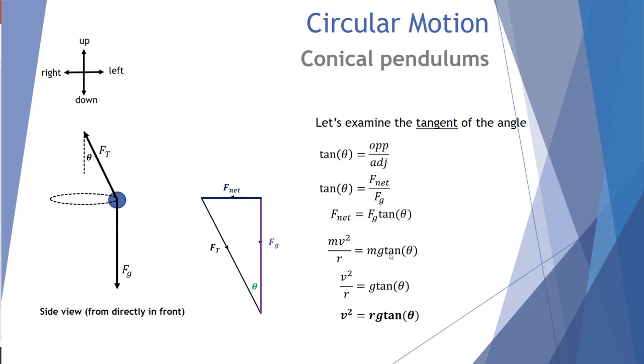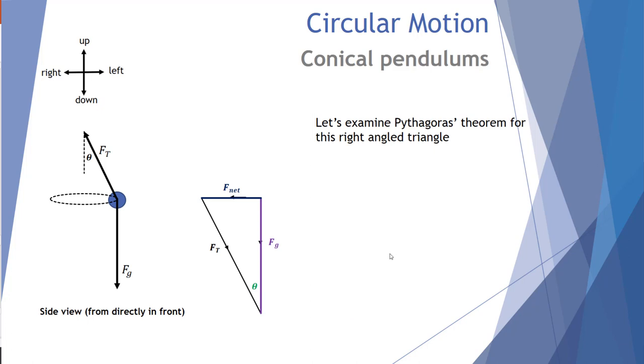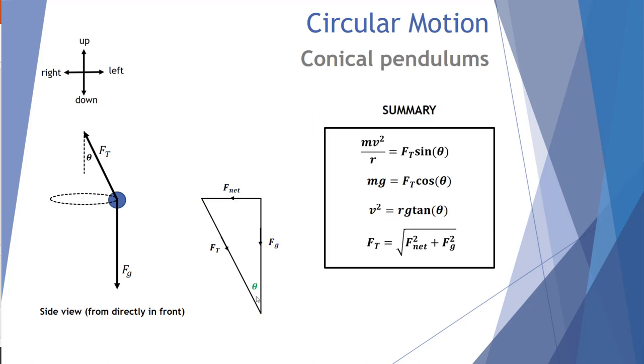There is one other right angle triangle relationship we can use, that being Pythagoras' theorem. So in this case, we remember the equation of A² + B² = C², where C is a hypotenuse and A and B are the two side lengths. So let's substitute that in. F_net is a side length, F_net², plus Fg, another side length, Fg², is equal to the hypotenuse, the tension force squared. So we can rewrite that and say that the tension force is equal to the square root of the force net squared plus the force of gravity squared. So we now have four equations that we can use to make calculations based upon an angle of a conical pendulum, given its mass, radius and velocity.